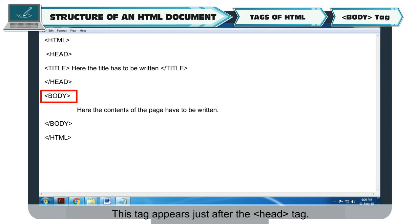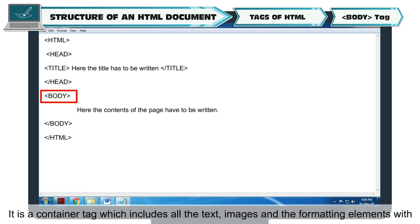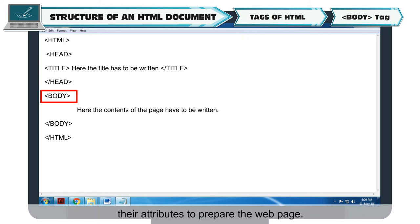Body Tag: This tag appears just after the head tag. It is a container tag which includes all the text, images, and formatting elements with their attributes to prepare the web page. Its syntax is: &lt;body&gt; whole content of the page &lt;/body&gt;.